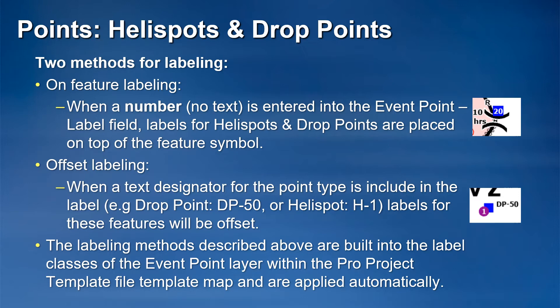If an editor enters a number into the label field of a drop point or helispot, that feature's label will automatically appear centered over the map feature. If the editor enters a label with a preceding text designator — an H or a DP — that label will automatically appear offset from the feature.